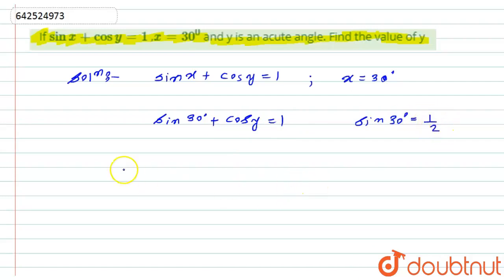Now as we know that sin 30 is equal to 1 by 2, so I will put here the value of sin 30 as 1 by 2. So the equation will become 1 by 2 plus cos y is equal to 1.